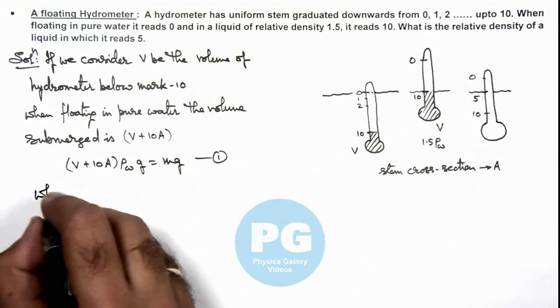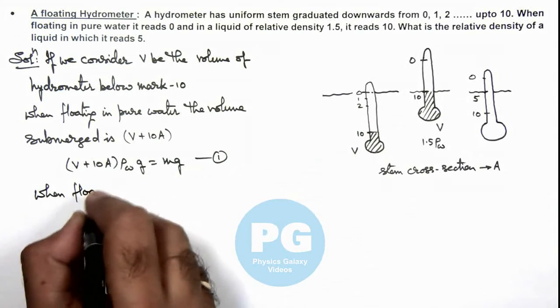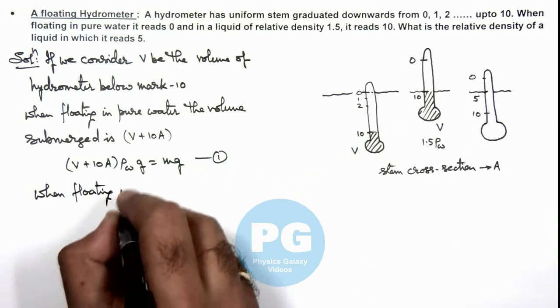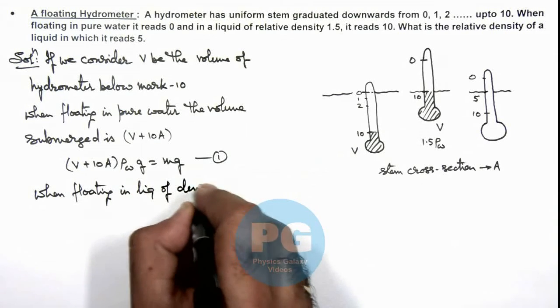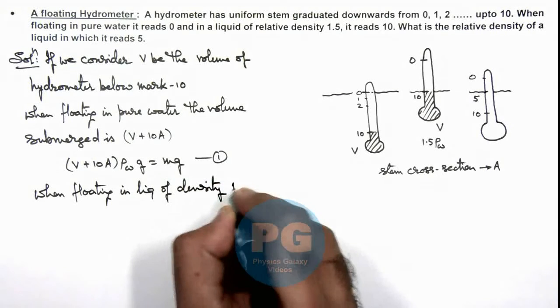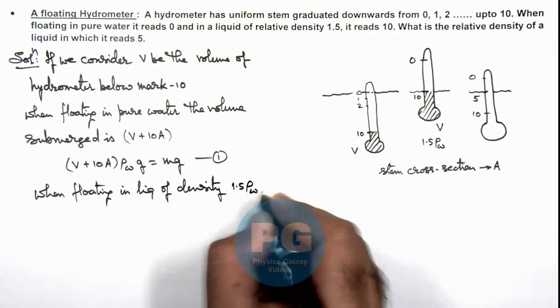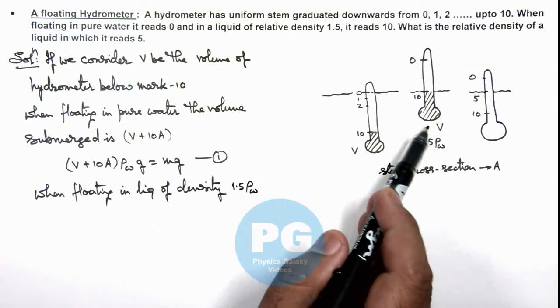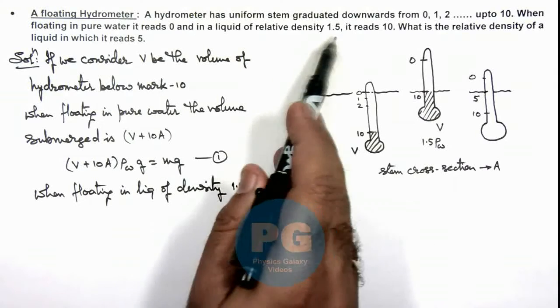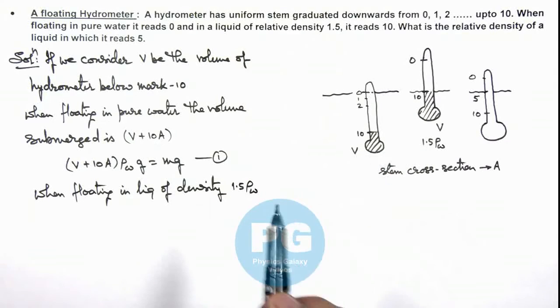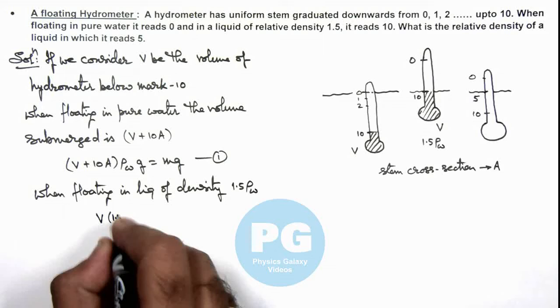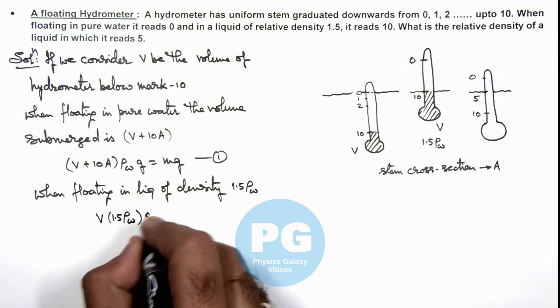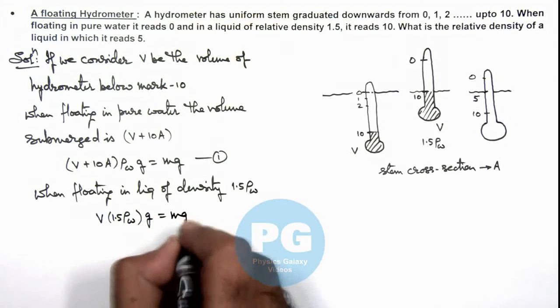Now we can write when floating in liquid of density 1.5 ρ_water, we are given that this liquid is having a relative density 1.5, so only V volume is submerged. So we can write V × 1.5 ρ_water × g is balancing the weight of hydrometer.